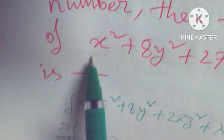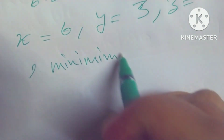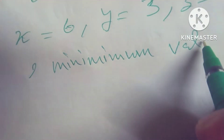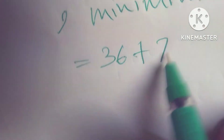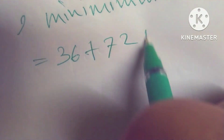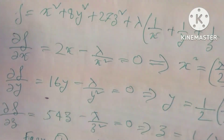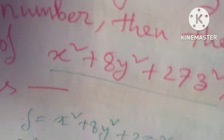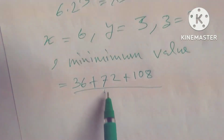The minimum value equals 36 plus 72 plus 108. Friends, note that in this problem we computed del f by del x, del f by del y, and del f by del z to get these values, but we should also verify that this is indeed a minimum and not a maximum.